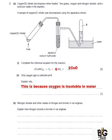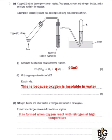Question B says nitrogen dioxide and other oxides of nitrogen are formed in car engines — explain how nitrogen dioxide is formed in car engines. Nitrogen dioxide is formed in the engine when oxygen reacts with nitrogen at high temperature.